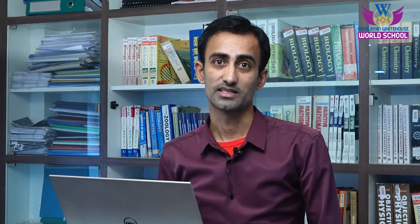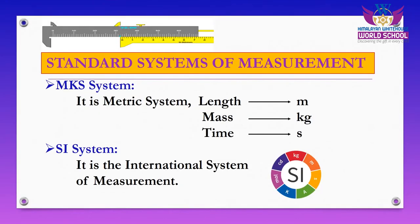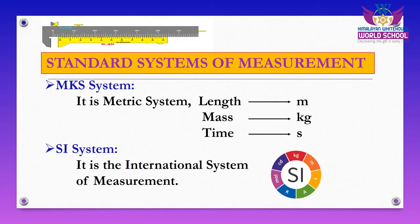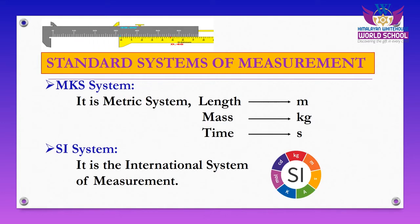The MKS system is also known as the metric system of measurement. It again has three quantities — length, mass, and time — measured in meter, kg, and second respectively. Finally, we have the latest system: the SI system, which is the international system of measurement. It includes all the fundamental quantities and their units, bringing uniformity in measurement worldwide.